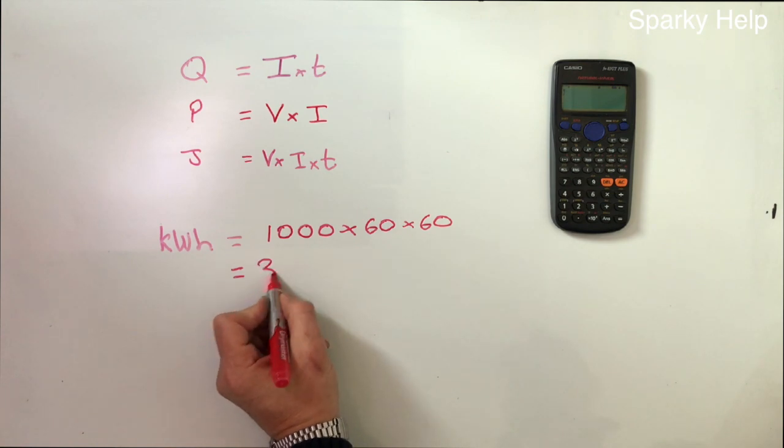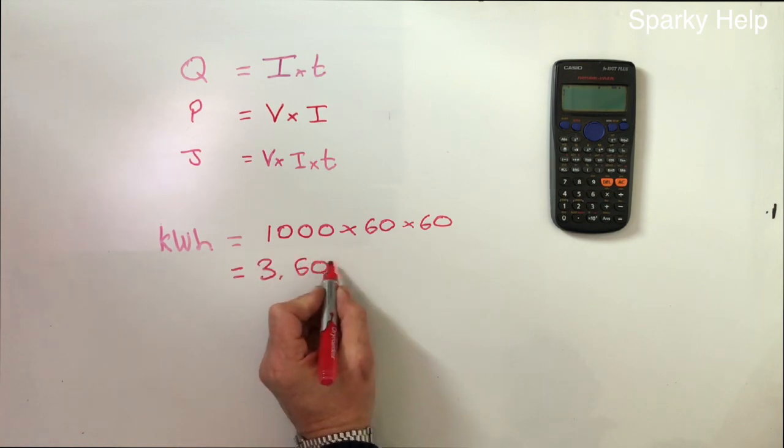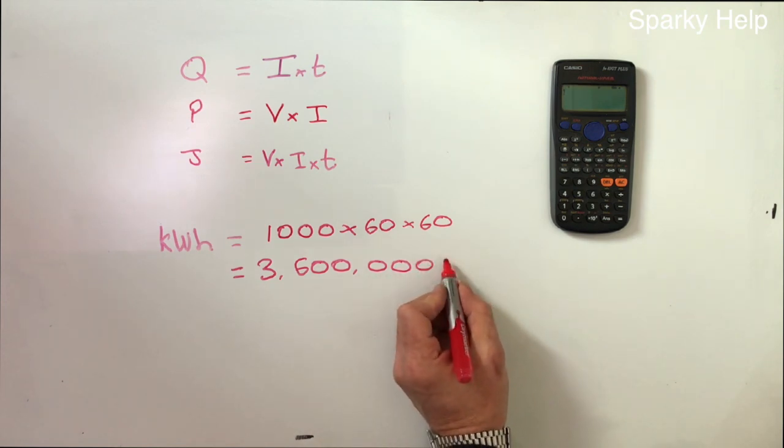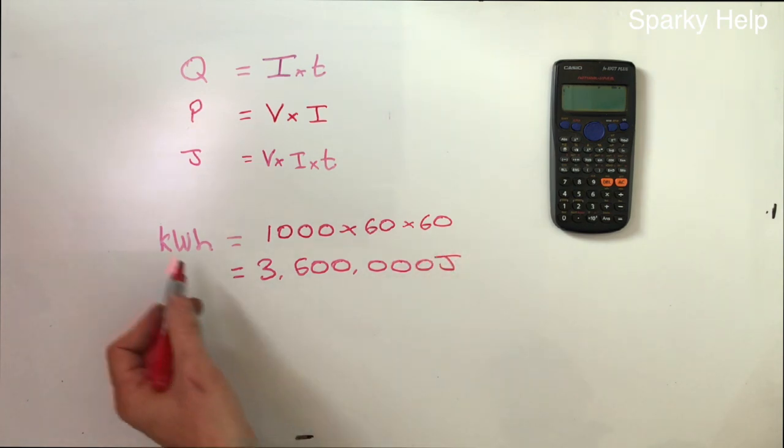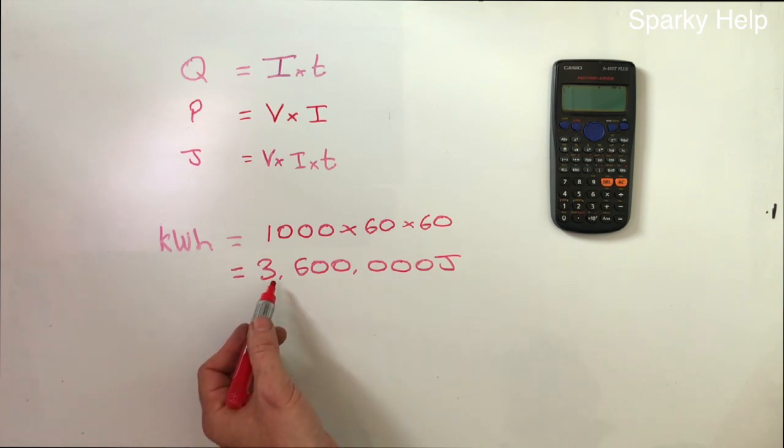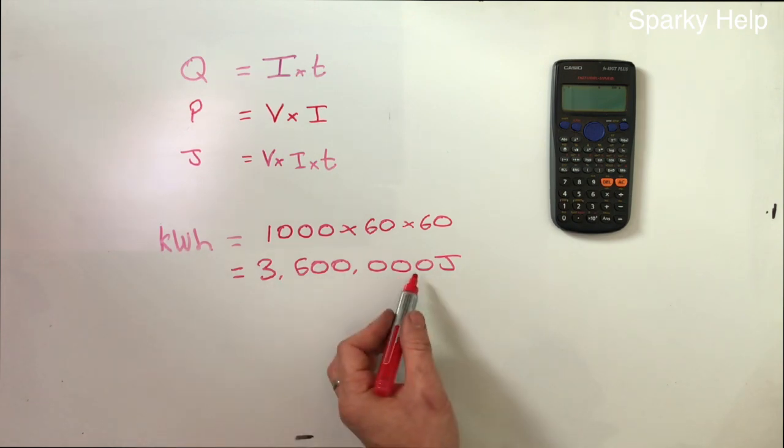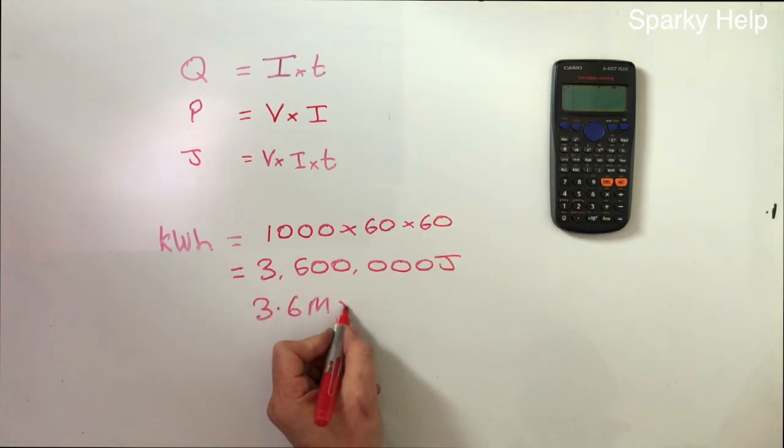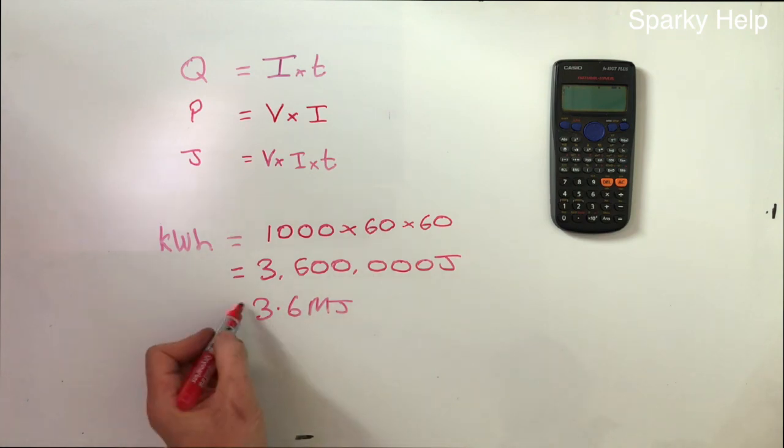So one kilowatt hour is 3,600,000 joules, or 3.6 megajoules of energy equals one kilowatt hour.